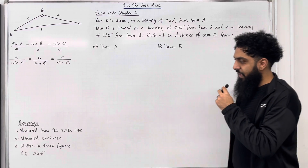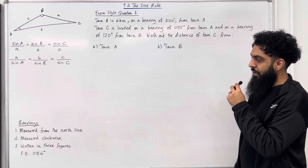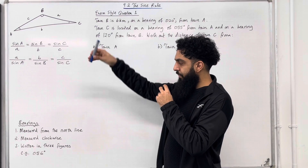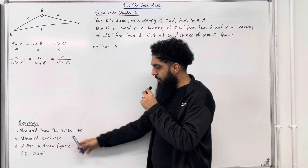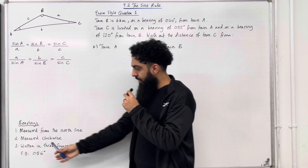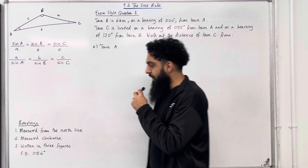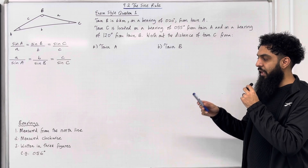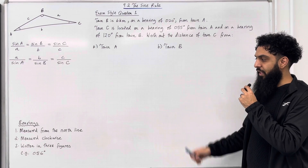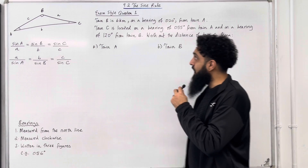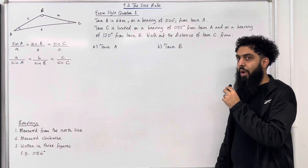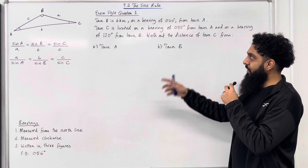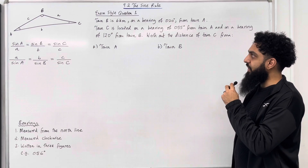Now, bearings key facts. Number 1: measured from the north line. Number 2: measured clockwise. Number 3: written in 3 figures. For example, 56 degrees is written as 056. This was covered in my teaching video 9.1 The Cosine Rule.